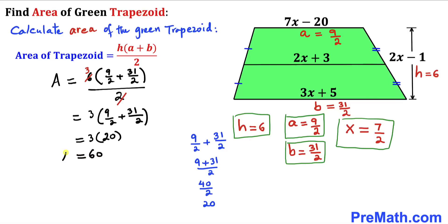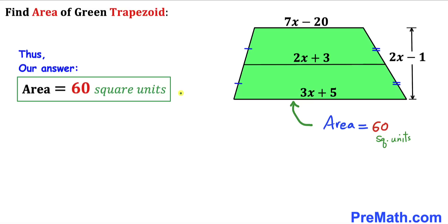The area of this green trapezoid turns out to be 60 square units. Thanks for watching, and please don't forget to subscribe to my channel for more exciting videos.